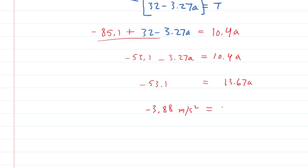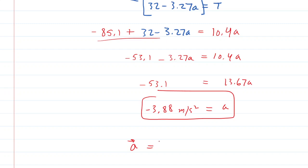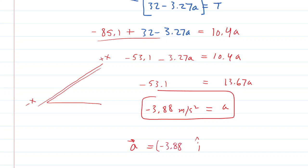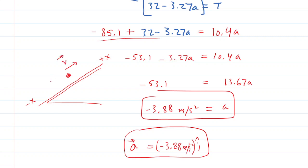The acceleration of body A is negative 3.88 meters per second squared. In unit vector notation, since the x-axis is parallel to the ramp with positive pointing up, this is negative 3.88 i-hat meters per second squared. Notice that in part B, body A was traveling up the ramp — velocity was in the positive direction — but the acceleration is down the ramp. This means body A was actually slowing down while traveling up the ramp.